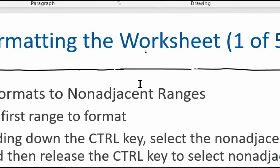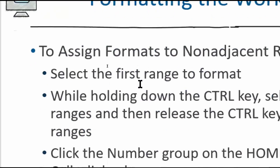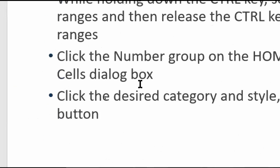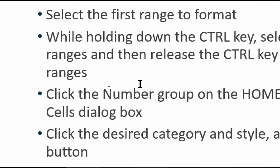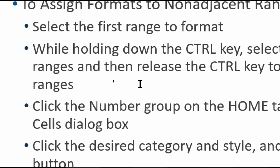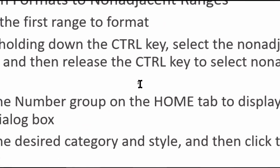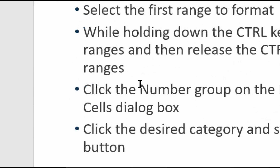Assigning formats to non-adjacent ranges works the same as before — use Ctrl to select things that aren't connected. You can click and drag to select multiple groups, or hold Ctrl and click once to select a single item, then apply whatever style or format you want.